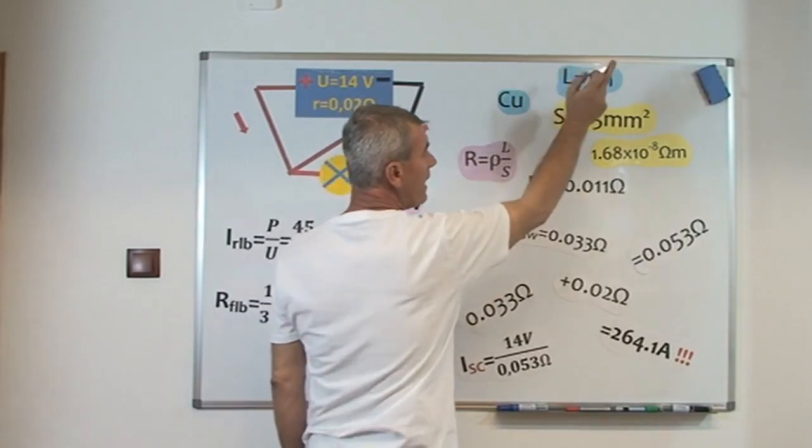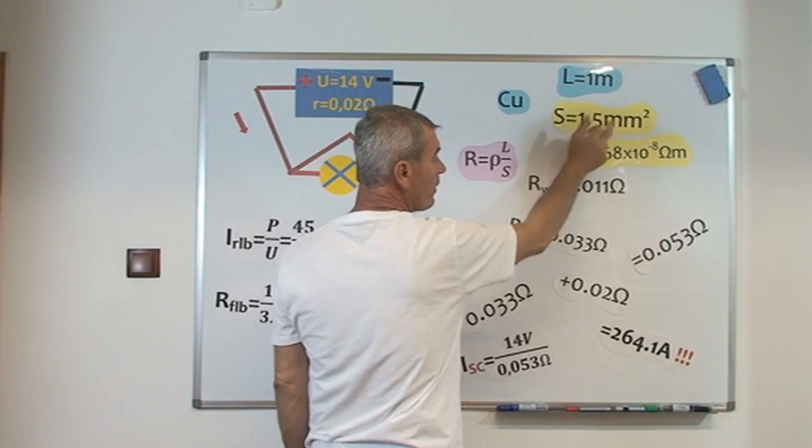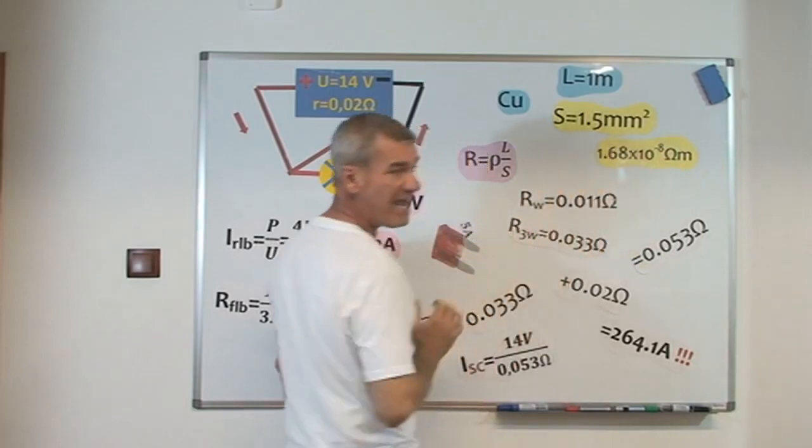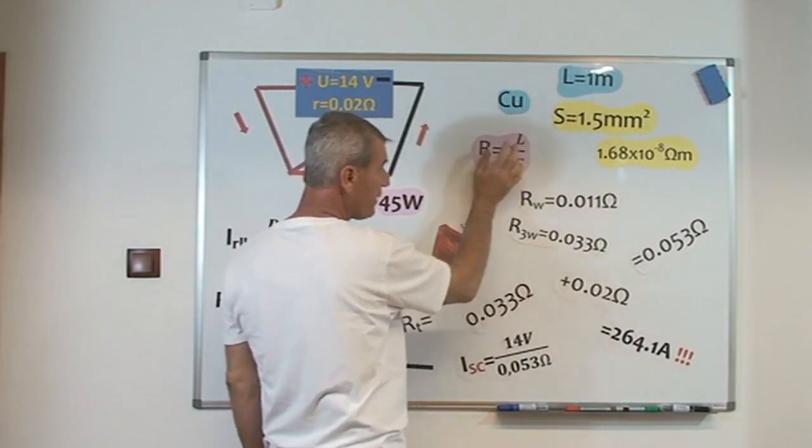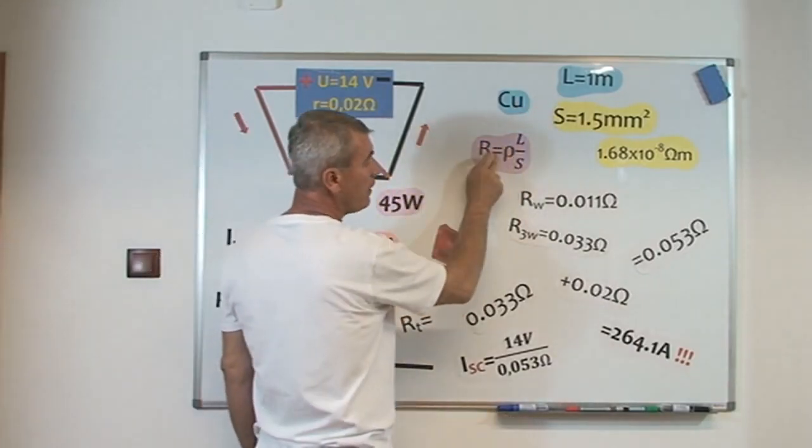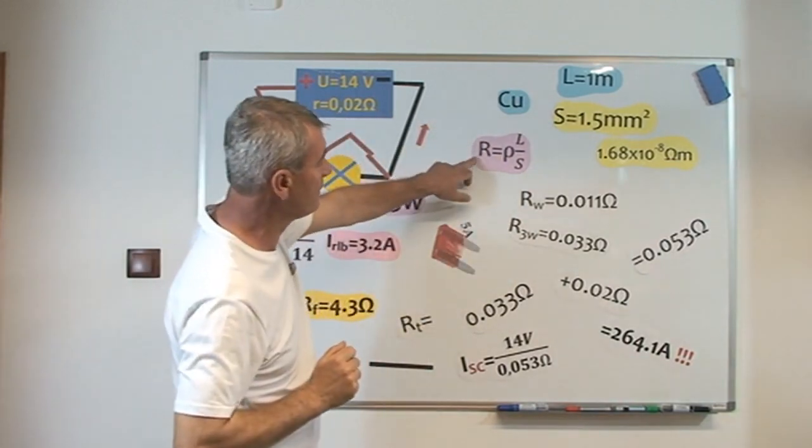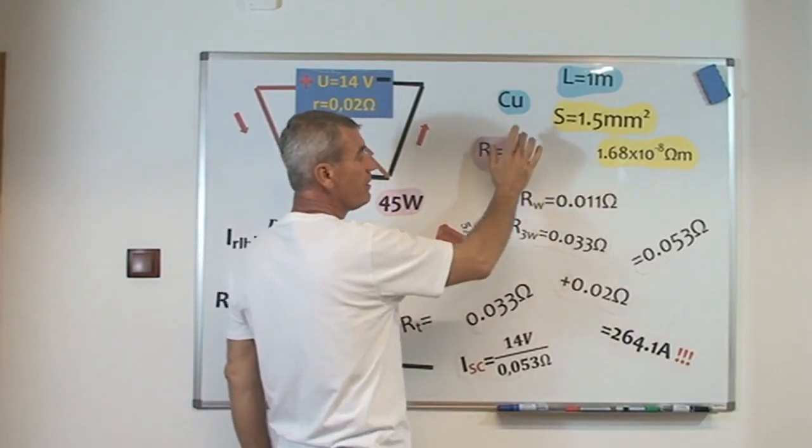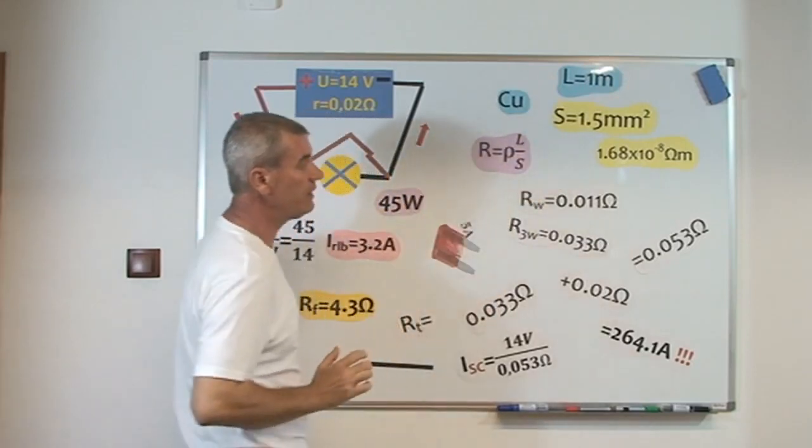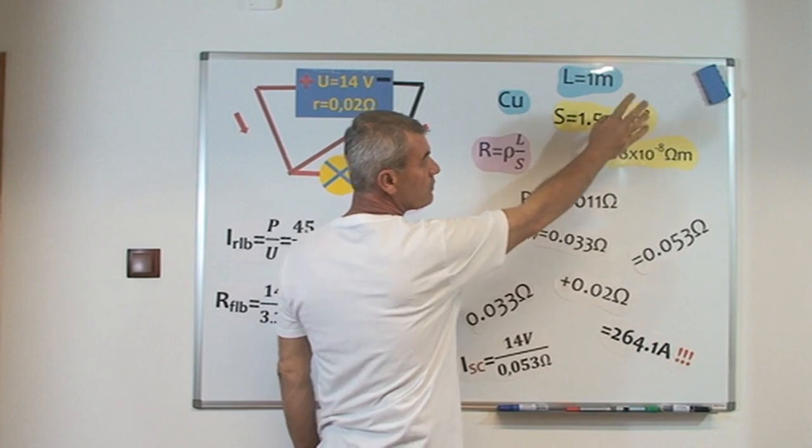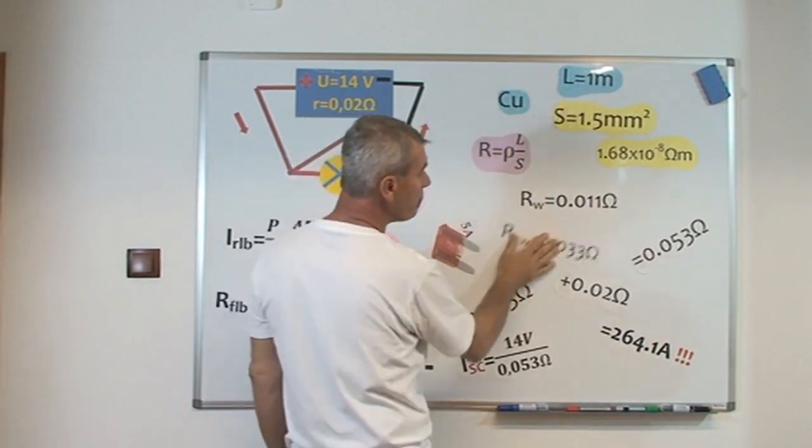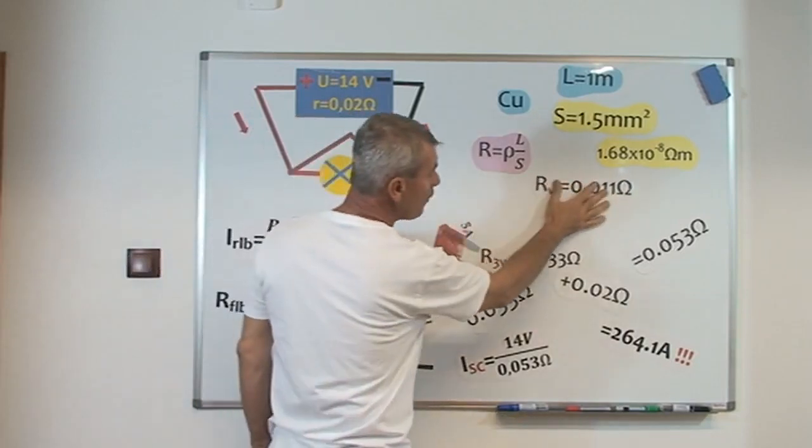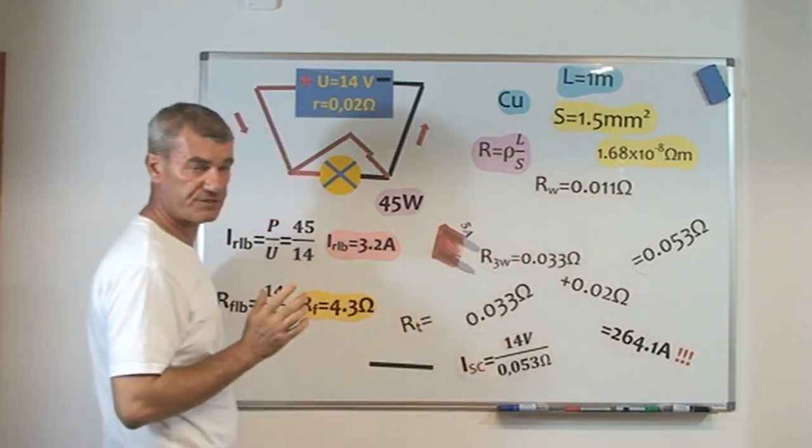I have copper, I have one meter length, I have section 1.5 square millimeters, and the electrical resistivity for copper is this value. For calculation, the electrical resistance for this wire, I use this relation, electrical resistivity for copper multiplied by length divided by section. For calculation, I converted section from square millimeters to square meters, and if you do the calculation, you will get for this electrical resistance 0.011 ohms.